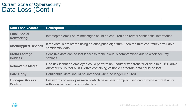Main vectors for data loss are email and social networks — intercepting emails or messages to capture important information. Unencrypted devices such as USB flash drives and hard drives that are lost. Cloud storage when compromised or using a weak password. Removable media — again, flash drives. Hard copies — paper, physical copies.